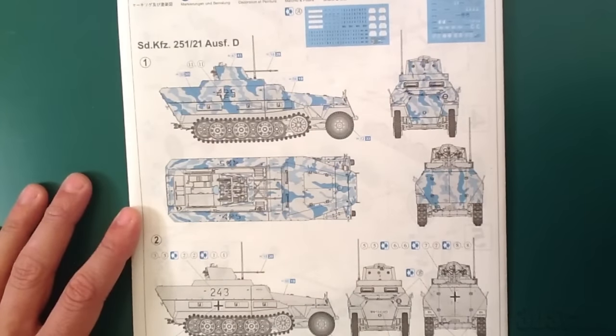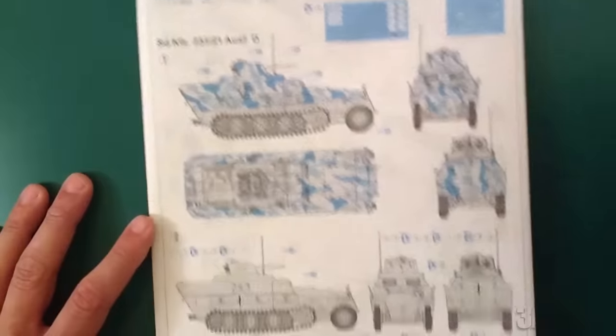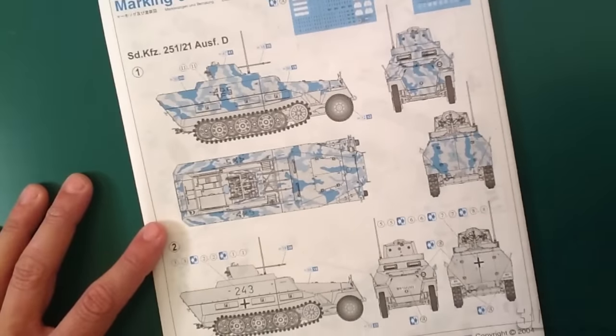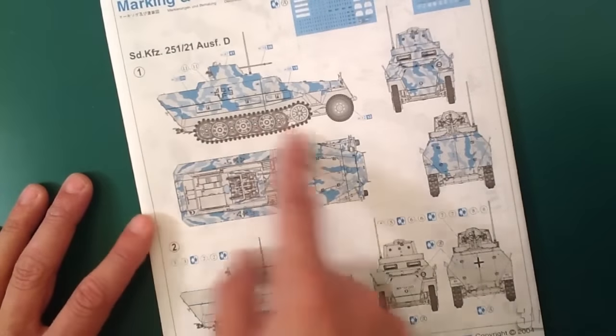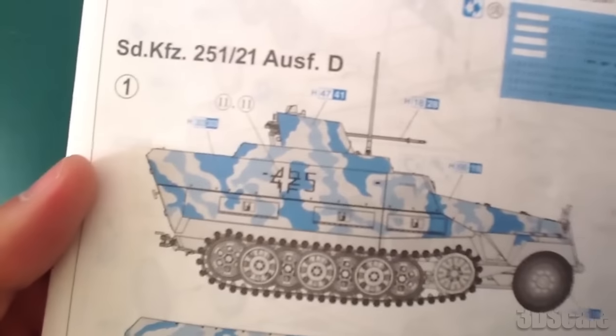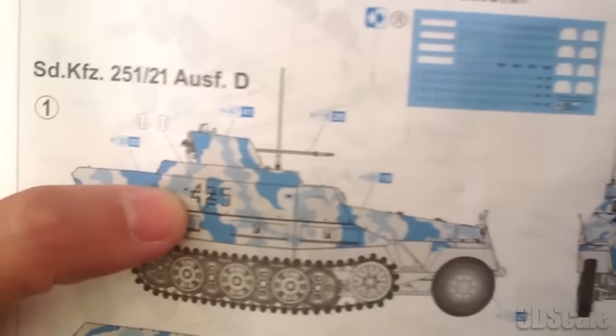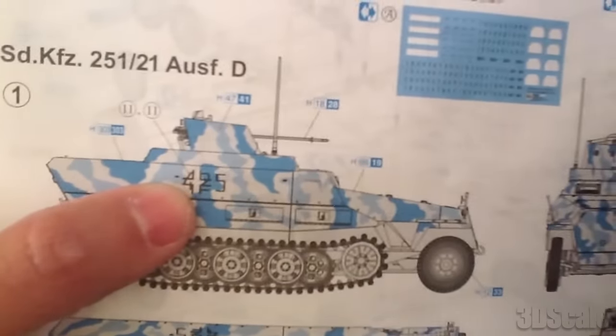They've got two markings. It doesn't really say anything about them other than numbers. So you've got Dunklegalb and this looks like tritonal. This has this interesting thing of having a Balkankreutz only be an outline and it intersects with the 4-2. It's kind of a strange look.